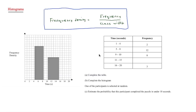The next part of single variable data is histograms. Histograms are used to display continuous data and their areas are proportional to the frequencies of the groups. The x-axis is the interval, whilst the y-axis is the frequency density. To work out the frequency density, you divide the frequency by the class width — this is extremely important.